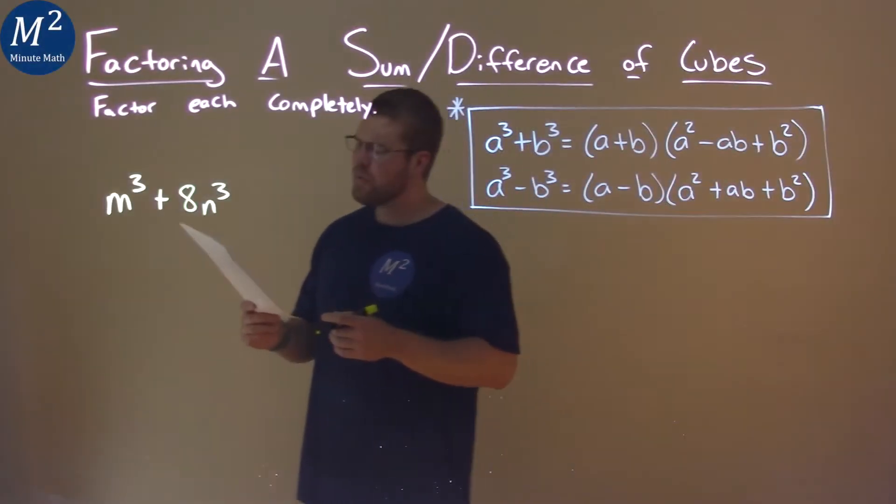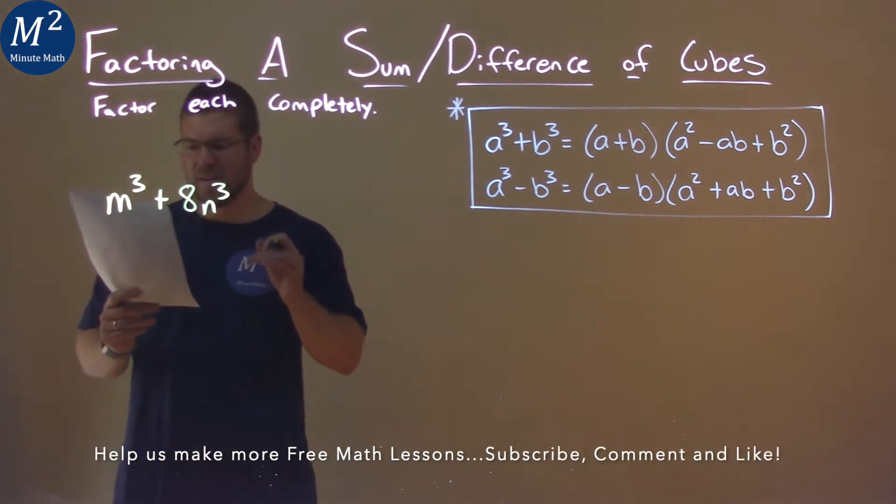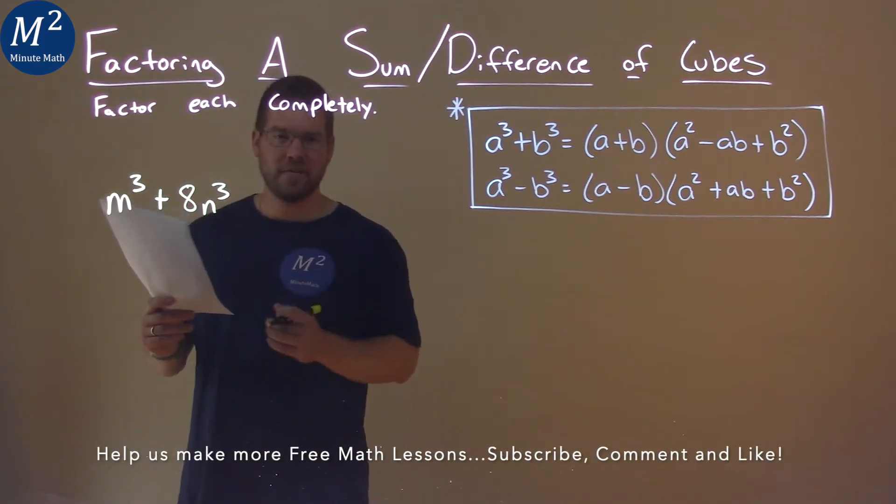We're given this problem right here: m to the third power plus 8n to the third power and we need to factor this completely.